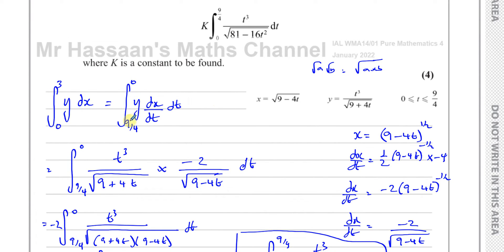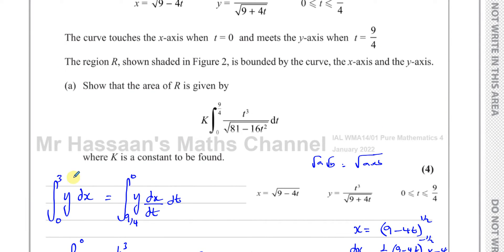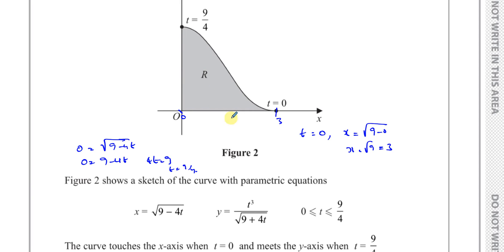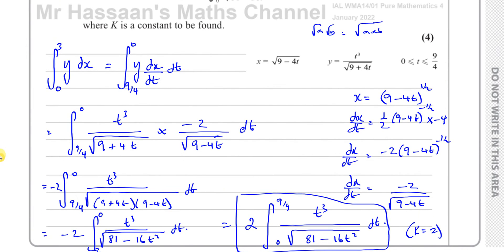In a previous video on this question I didn't take care about the limits — I put 9/4 and 0 from the beginning, so the answer had minus 2 where it should be plus 2. When x = 3, t = 0; when x = 0, t = 9/4, so that's how it should be. The area is above the x-axis and should be positive. Thank you to Study Chan for pointing that out.